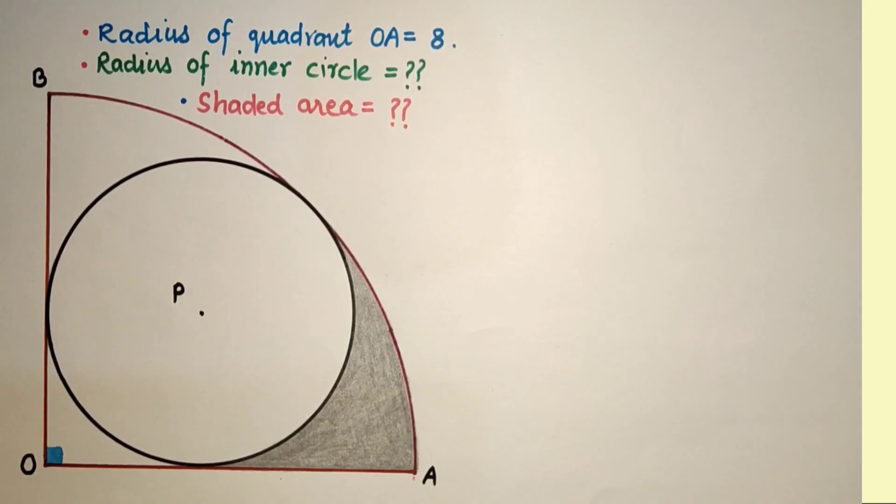Hello and welcome to my YouTube channel. Today we will discuss this question. There is a quadrant given, a circle touches the quadrant as shown in the diagram.